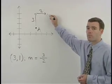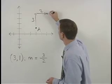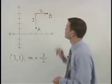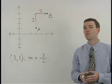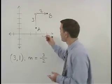And that's where we plot our second point which we call B. Our answer is then the line that contains the points A and B.